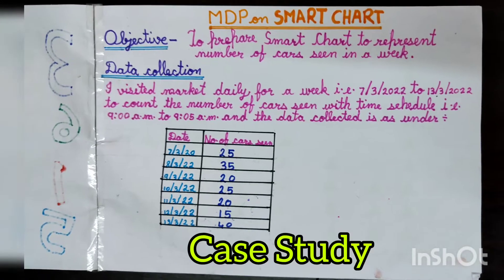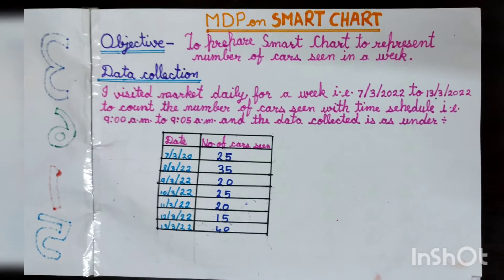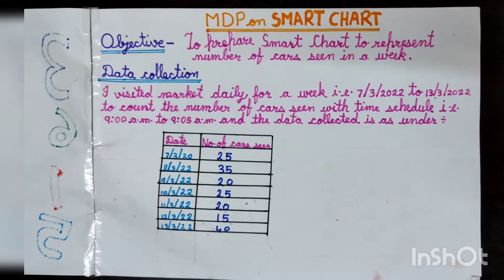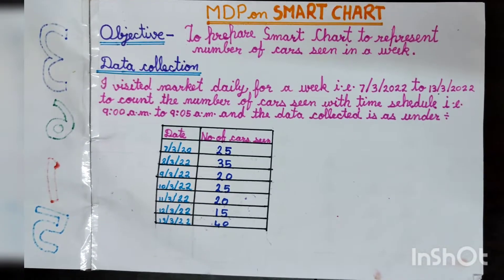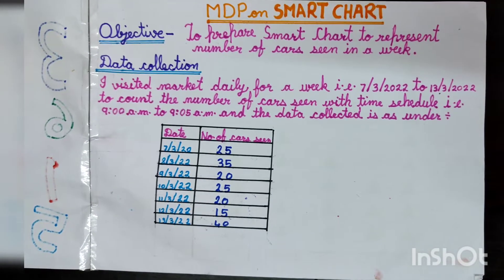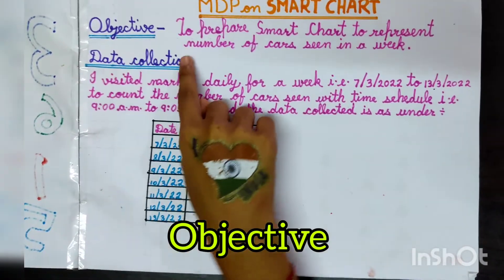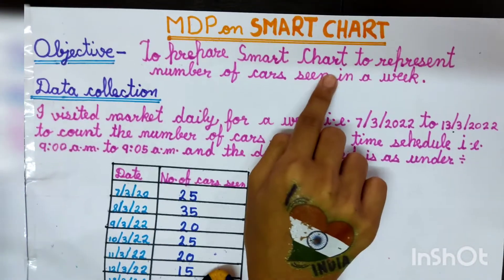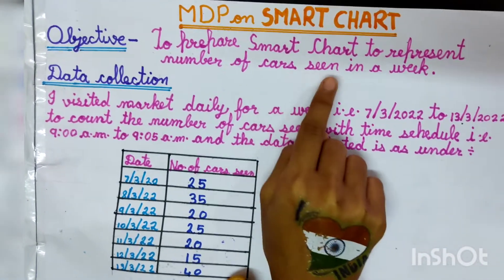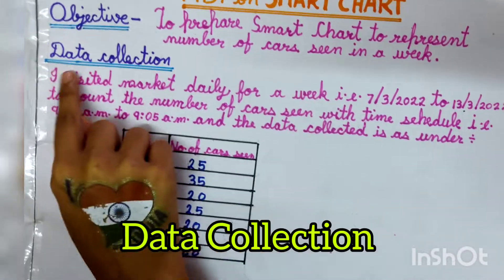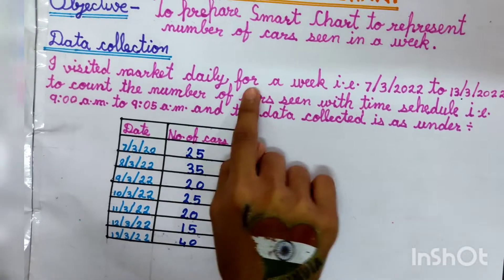I have taken a case study to represent the number of cars seen on the road within a particular period, to find the day in which the most cars and least cars were seen. The objective is to prepare Smart Charts to represent the number of cars seen in a week.